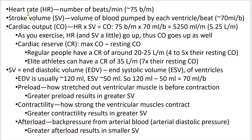Here's the first slide. Heart rate is the number of beats per minute. Stroke volume is how much blood gets released by each ventricle per beat. Cardiac output is how much you put out per minute — milliliters per minute. So if we've got beats per minute and milliliters per beat, we can calculate milliliters per minute by eliminating beats. Heart rate times stroke volume gives you cardiac output.